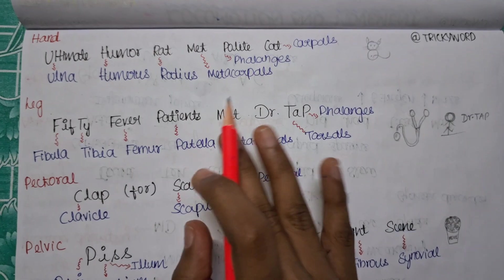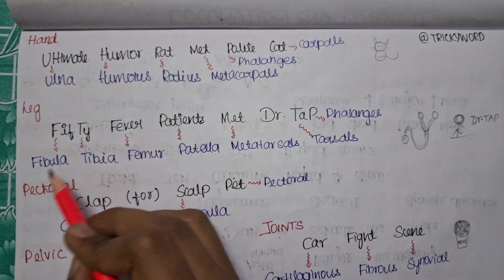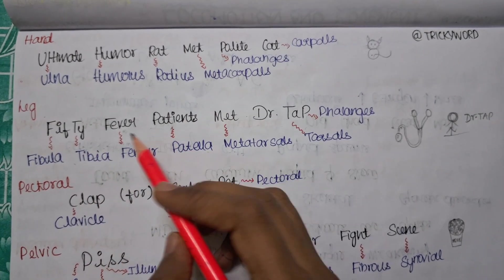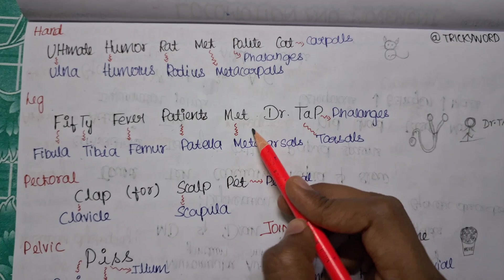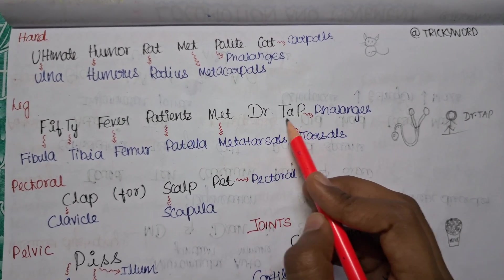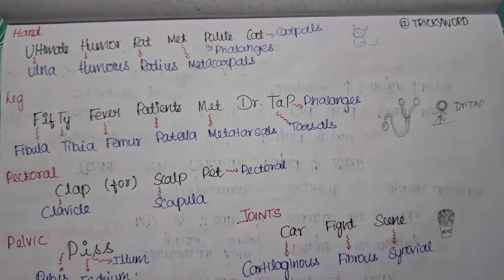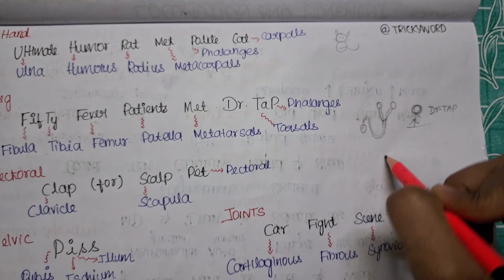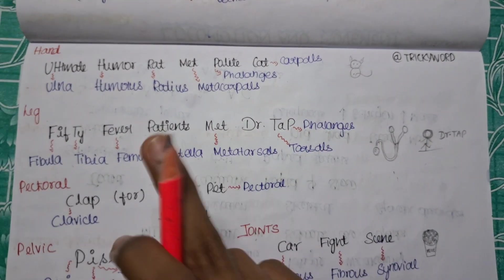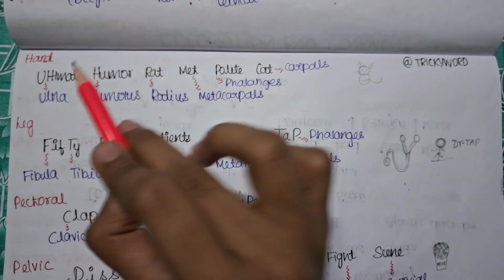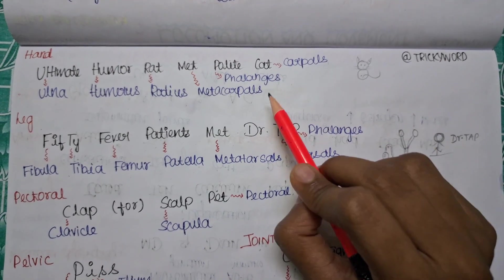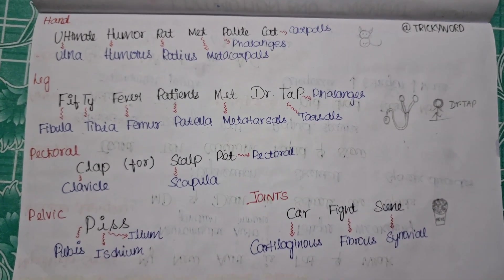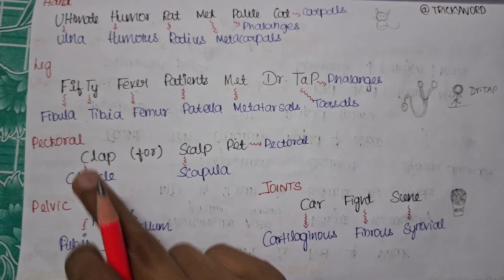Now to talk about the leg: 50 fever patients met Dr. Tap. 50 fever patient met Dr. Tap. So what is this? 50 - F-I-B-U-L-A - fibula, T-I-B. Fever - femur. Patients - patella. Met - metatarsals. Doctor Tap - TA is for tarsals, P is for your phalanges. So 50 fever patients met Dr. Tap. These drawings might not be good, but this will help you to remember. As I have mentioned in my earlier video also, whenever you draw something, whenever you think of hand this cat will come in picture more than this trick. So it will help you to remember the trick as well. That's why I have mentioned cute cute diagrams. If you can draw well, please do write these diagrams and draw it very well, so it will help you to memorize our tricks very easily.